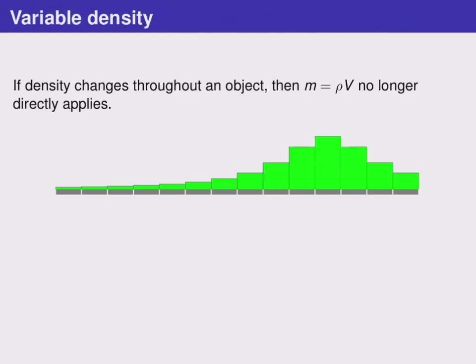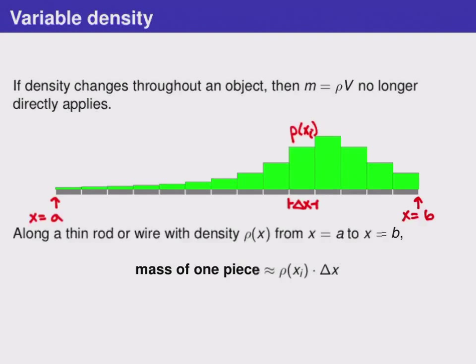So to calculate the total mass of this rod or piece of wire, we can imagine taking the mass of just one piece and adding all of it up.